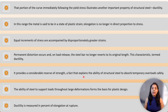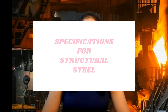This characteristic is termed ductility. It provides a considerable reserve of strength, which explains the ability of structural steel to absorb temporary overloads safely. The ability of steel to support loads throughout large deformations forms the basis for plastic design. Ductility is measured as the percentage of elongation at rupture.